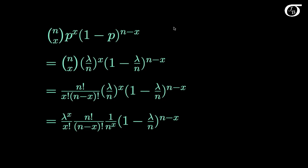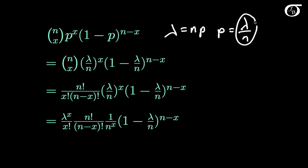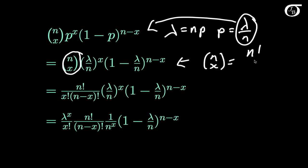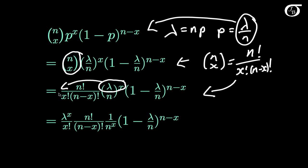Here we have our binomial formula, and now I'm simply going to let lambda equal np, which means that p is equal to lambda over n. I'm going to substitute this value in. Now I'm going to open up this n choose x — we know that n choose x equals n factorial over x factorial times n minus x factorial — and I put that in. Then I take the lambda to the x outside along with the x factorial, so we have lambda to the x over x factorial times what remains.